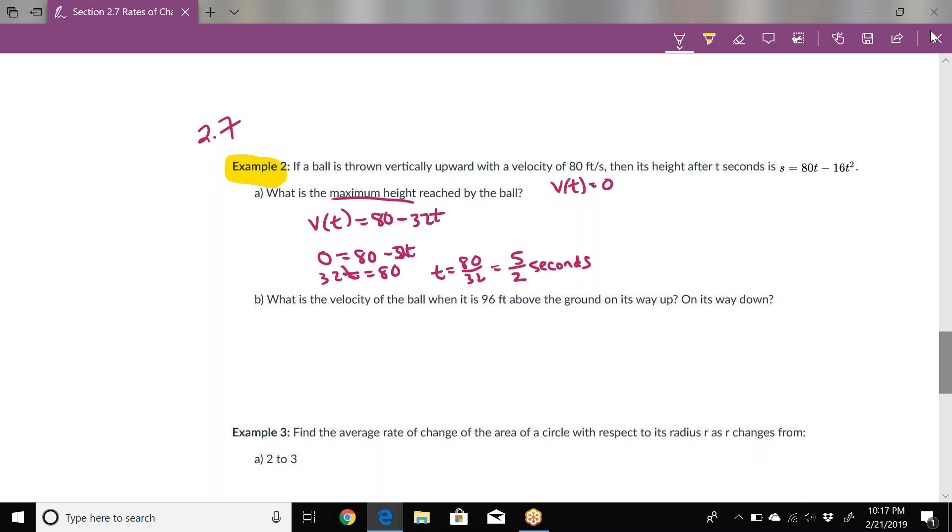Now we need to find what the height would be at 5/2 seconds. We're going to plug that back into our position function. That's going to be 80 times 5/2 minus 16 times (5/2)².